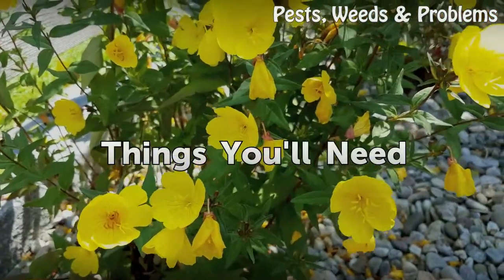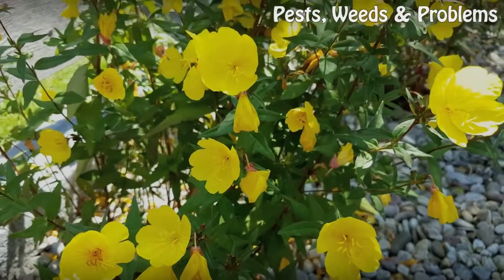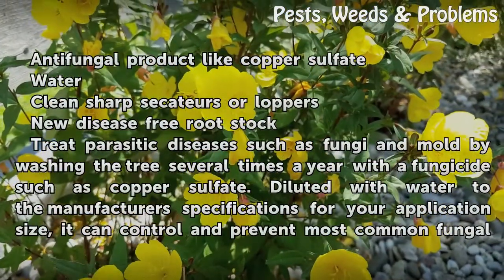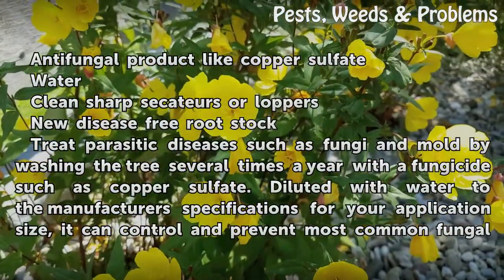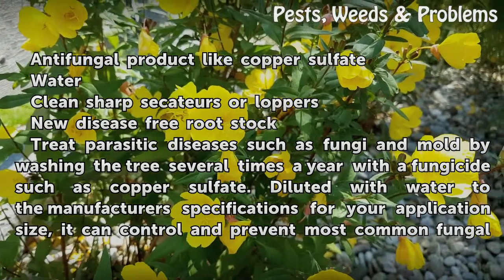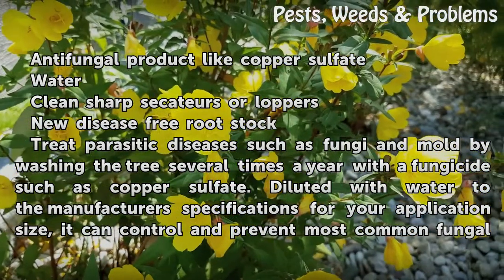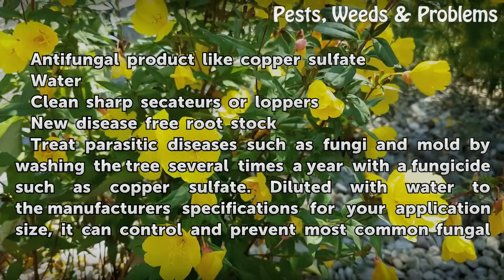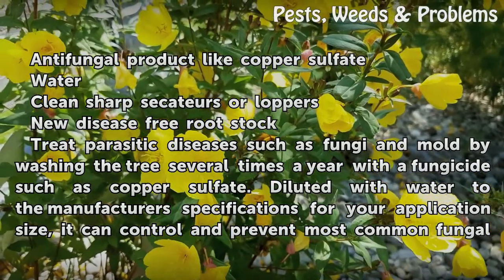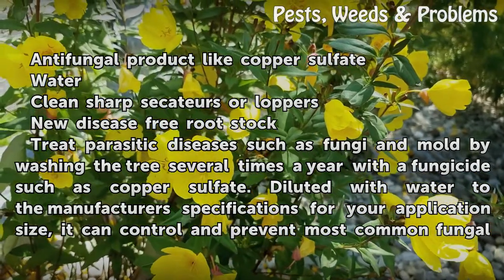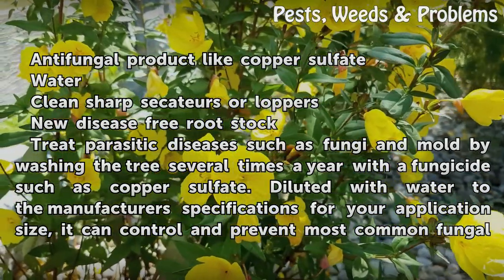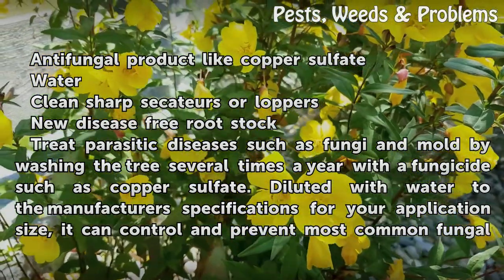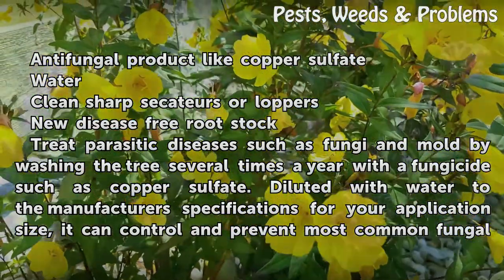Things you will need: an anti-fungal product like copper sulfate, water, clean sharp secateurs or loppers, and new disease-free rootstock. Treat parasitic diseases such as fungi and mold by washing the tree several times a year with a fungicide such as copper sulfate.